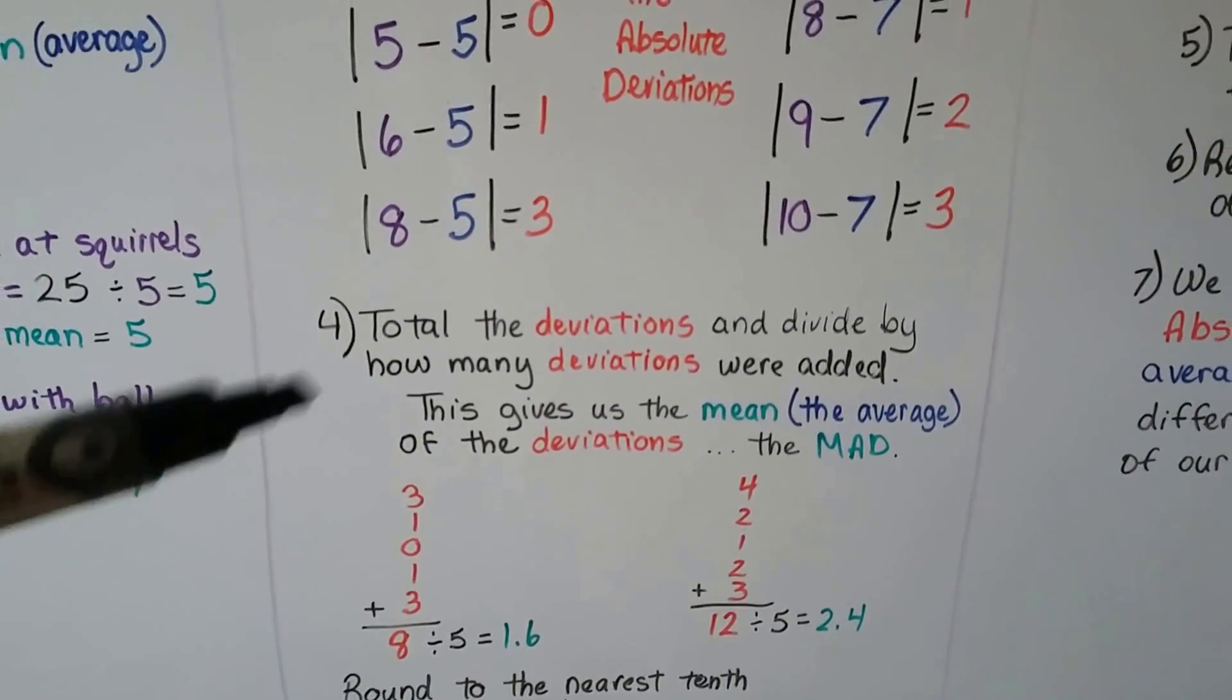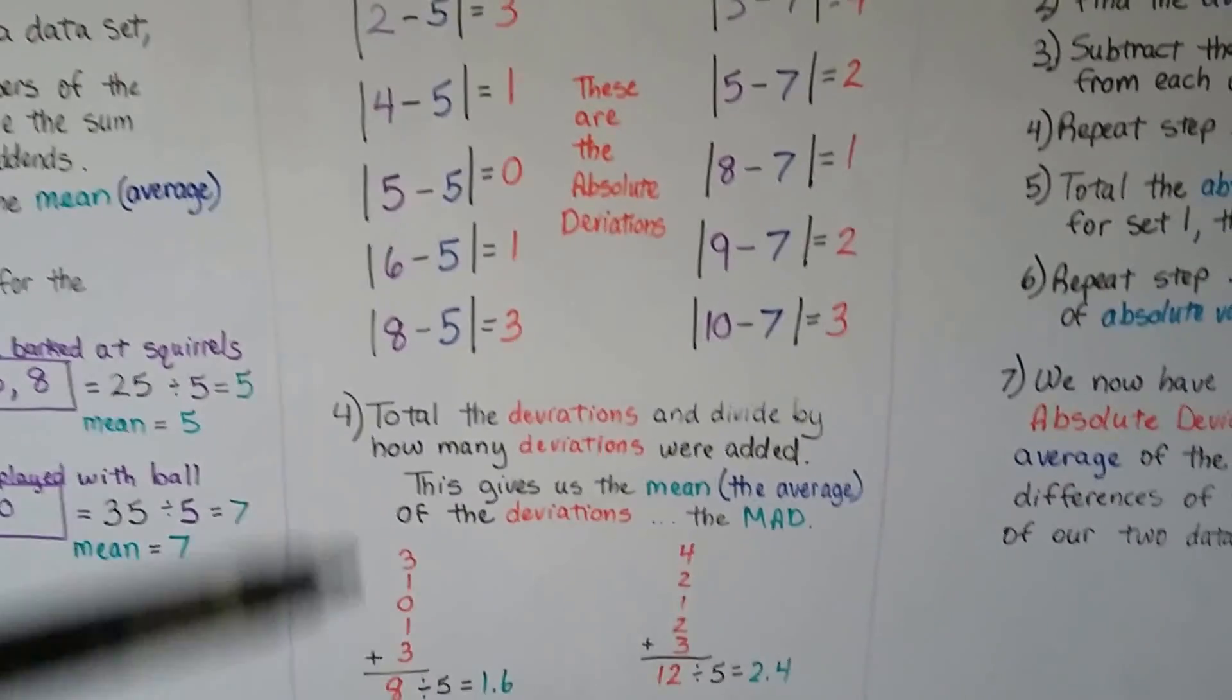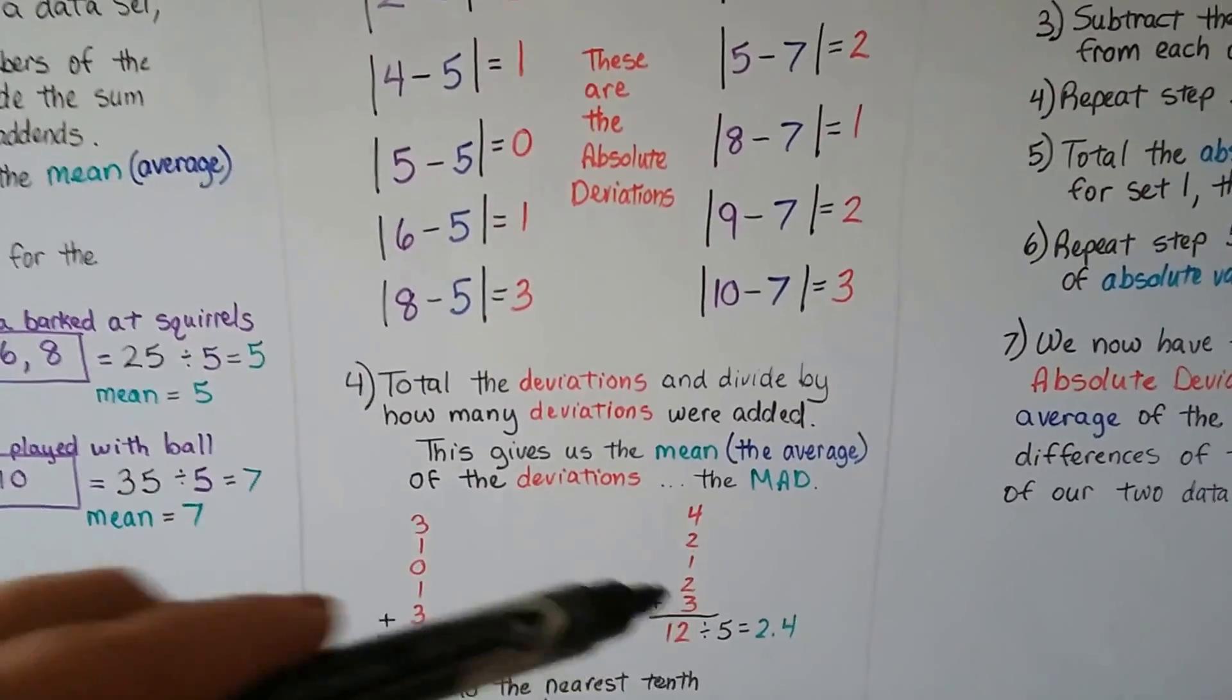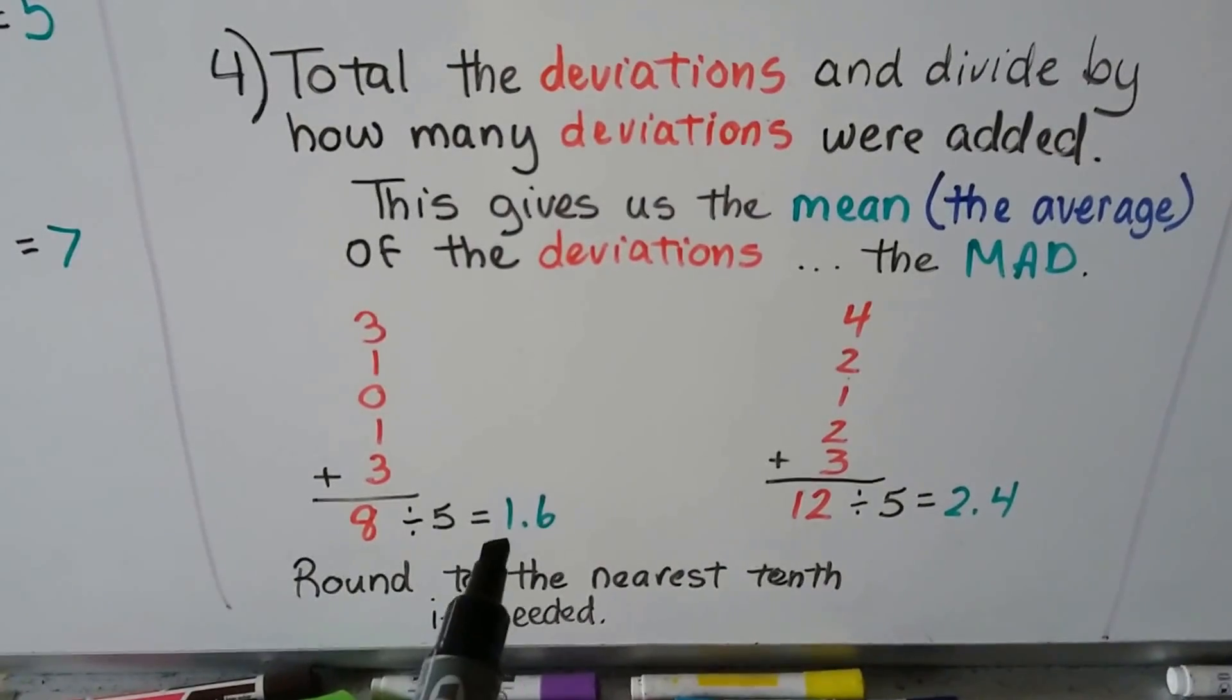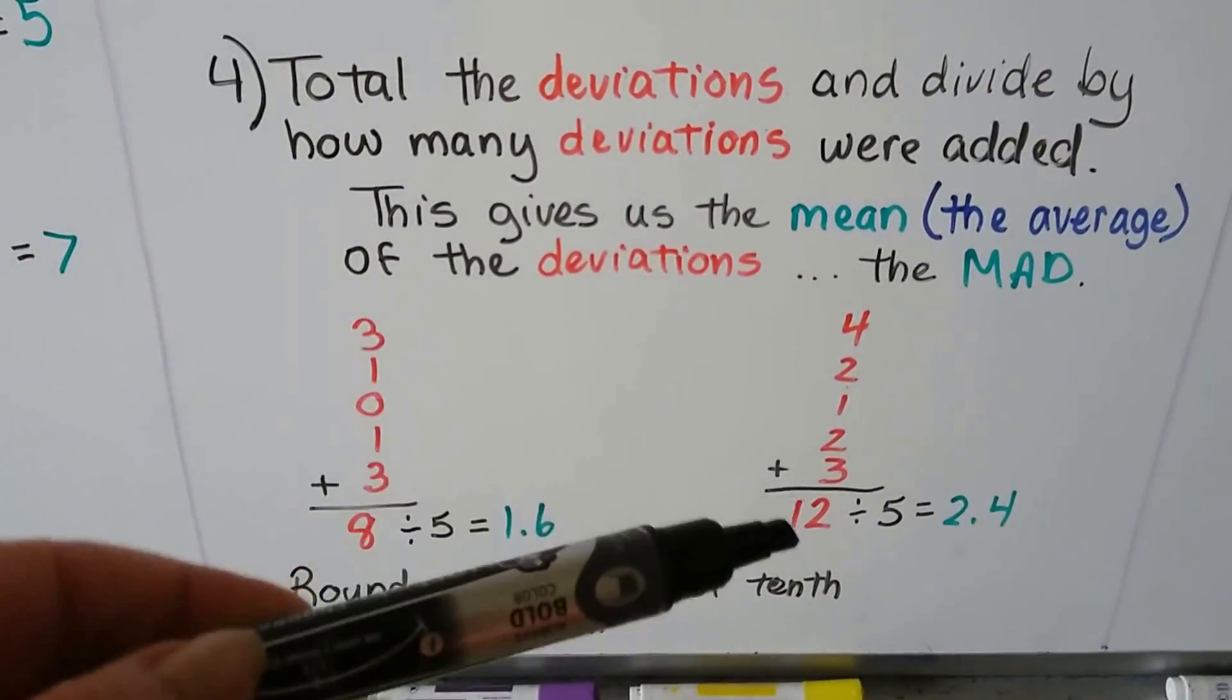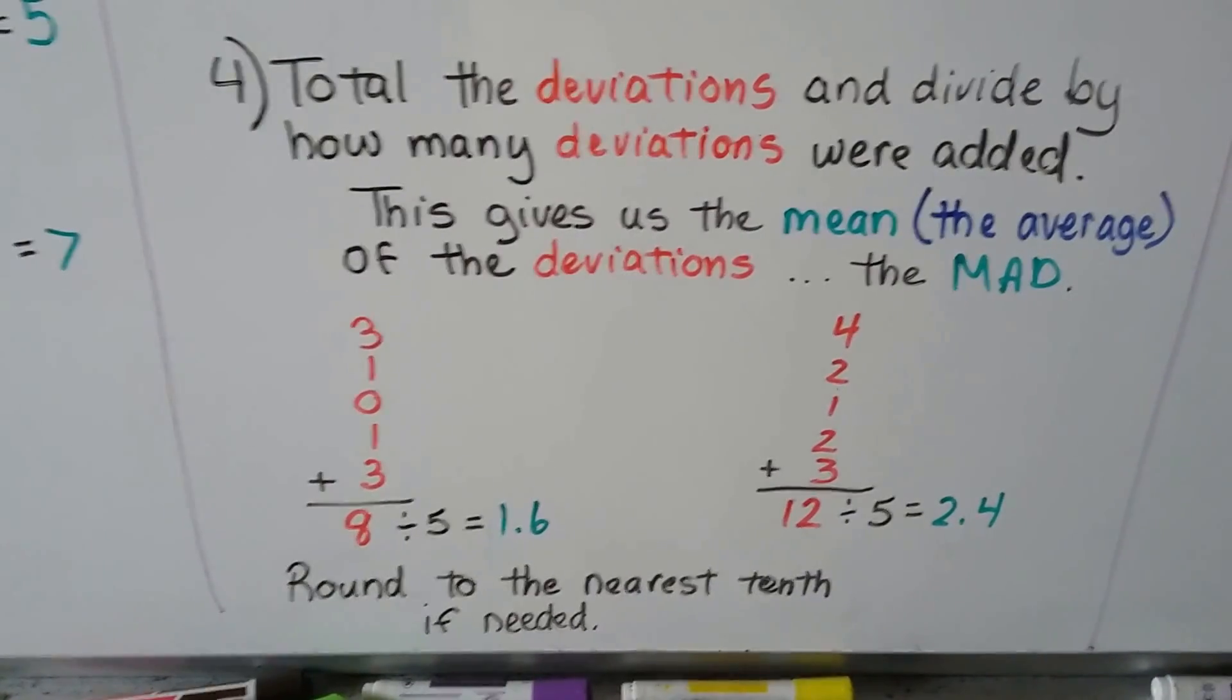We total these deviations. The 3, 1, 0, 1, 3. We get an 8. We total 4, 2, 1, 2, 3. We get a 12. And because we totaled 5 addends, we're going to divide it by 5 again, and it comes out as a 1.6. This 12 divided by the 5 addends comes out to a 2.4. We can round to the nearest tenth if needed.